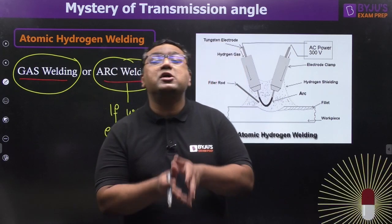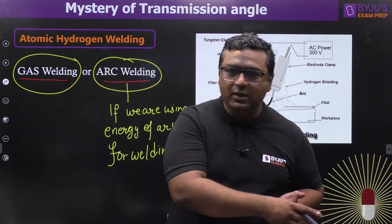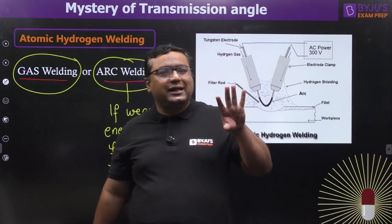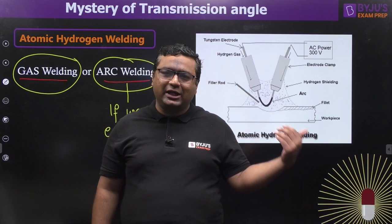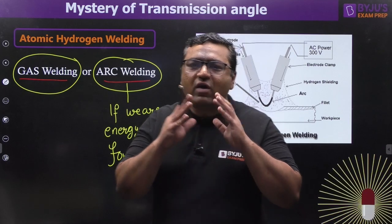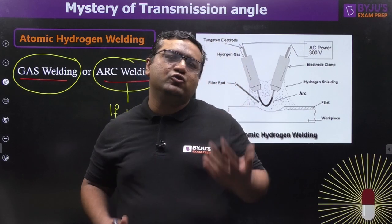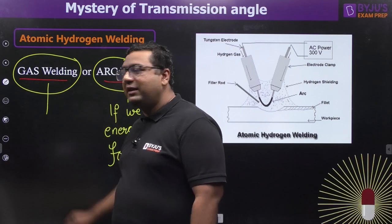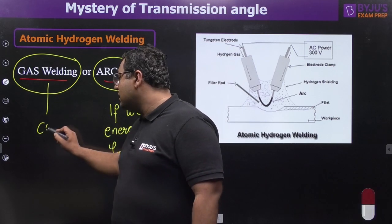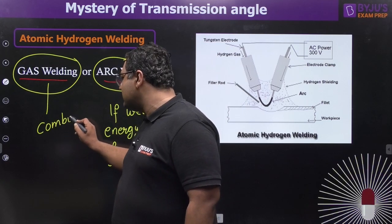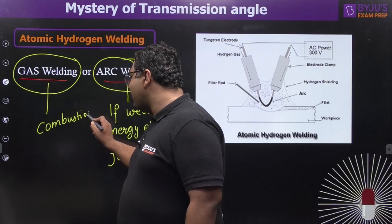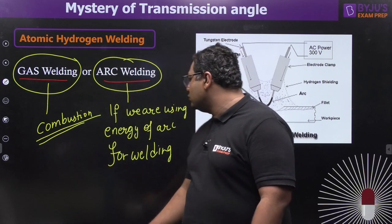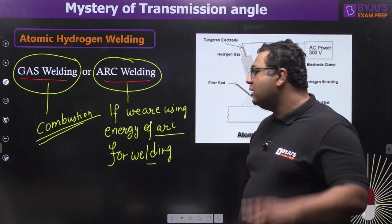On the other hand, if we are going for some exothermic reaction like combustion, that is gas welding. In combustion, hydrocarbons react with oxygen, giving carbon dioxide and steam along with a large amount of energy released, which is used for the welding purpose. So combustion is the principle of gas welding. If you are using energy of an arc it is arc welding; if combustion, it is gas welding.